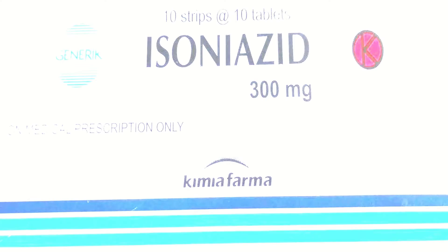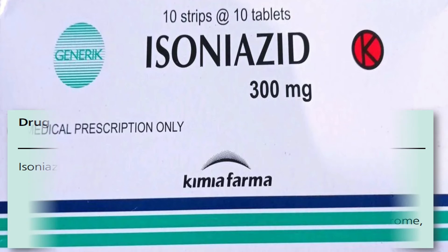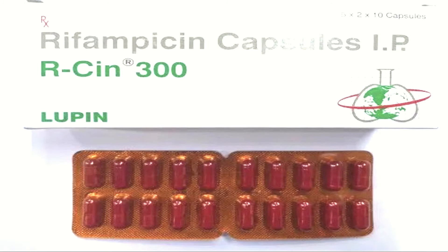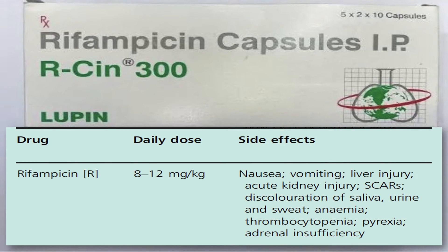According to the DDOG article, isoniazid daily dose is 4 to 6 mg/kg; side effects include liver injury, peripheral neuropathy, neuritis, seizures, severe cutaneous adverse reaction, psychosis, lupus-like syndrome, vasculitis, and pancreatitis. Rifampicin is given at a daily dose of 8 to 12 mg/kg.